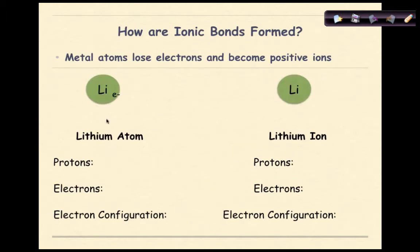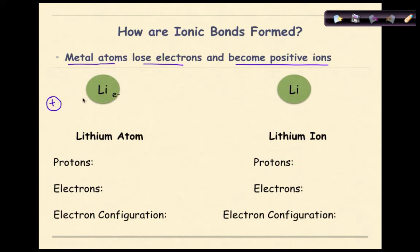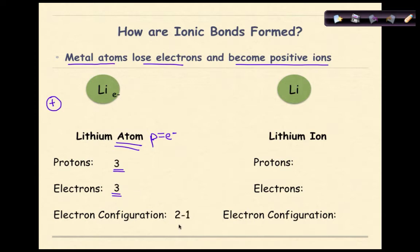So how are ionic bonds formed? Let's start with metals. Metal atoms are going to lose electrons and become positive ions. Here I have a representation of a lithium atom. For a lithium atom, the number of protons is 3 because that's its atomic number. Because we're talking about atoms, protons always equal electrons, so the number of electrons is also 3. The electron configuration is 2-1.